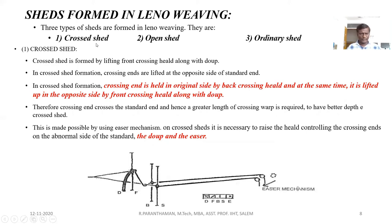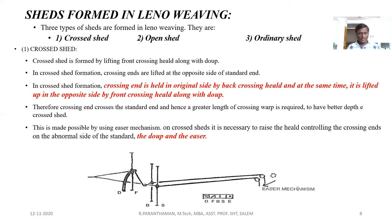Sheds formed in Leno weaving: crossed shed, open shed, and ordinary shed. In this fabric production, the crossing end crosses left to right and right to left relative to the standard end, forming two kinds of sheds. The crossed shed is formed by lifting the front crossing heald along with the dupes. In crossed shed formation, the crossing end is lifted to the opposite side of the standard end. The crossing end is held on the original side by the back crossing heald and at the same time is lifted to the opposite side by the front crossing heald along with the dupes. Therefore, the crossing end crosses the standard end, and hence a greater length of crossing yarn is required for better depth of crossed end.